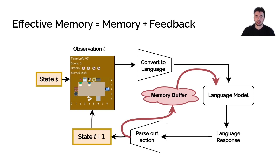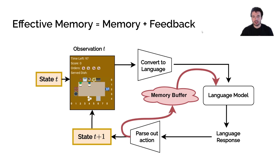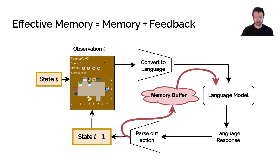We propose adding something called effective memory, which is a memory buffer. This memory buffer tells the agents what the last actions they took were. With effective memory, we also add feedback, which gives agents information about whether they did something right or wrong based on previous actions.